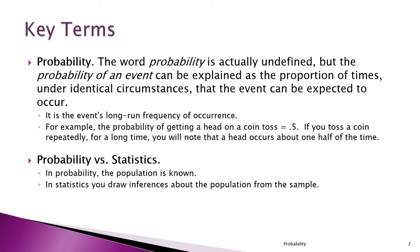Now there's a difference between probability and statistics. In probability, the population is known. You know what mu is going to be — mu is np. You toss the coin 100 times, you're supposed to get 50 heads.